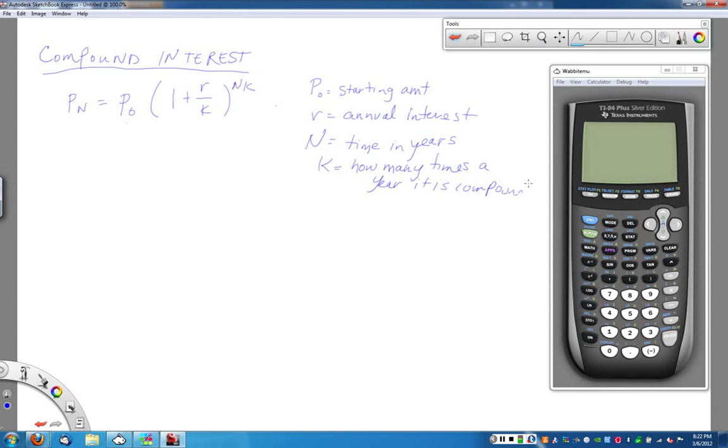So let's do some simple examples here. Let's suppose that we decide to make a, put in $500 into an account. It's going to pay 3% interest and I'm going to keep it in my account or 3% interest compounded monthly. And I'm going to keep it in my account for five years. Okay?